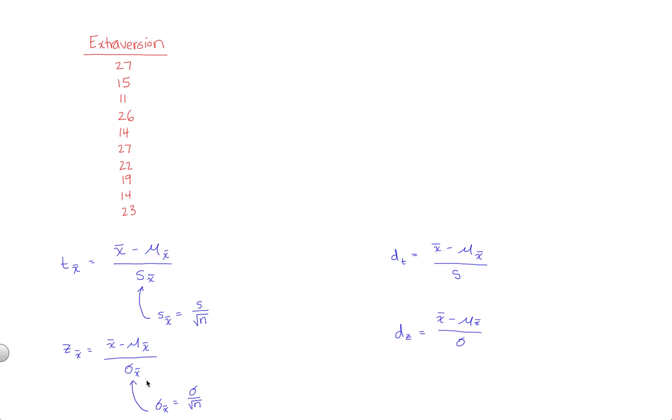The denominator is what differs. So for hypothesis tests, standard error will always go in the denominator. For a z-test, that's true standard error, standard deviation in the population divided by the square root of your sample size. For a one-sample t-test, it's estimated standard error made to approximate true standard error. And for that, you're going to take sample standard deviation divided by the square root of your sample size.